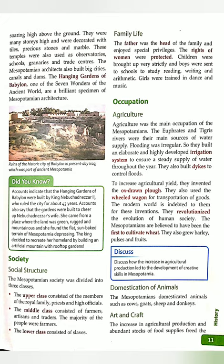The middle class consisted of farmers, artisans — meaning craftsmen — and traders who buy and sell goods. The majority of the people were farmers. The lower class consisted of slaves, meaning servants.